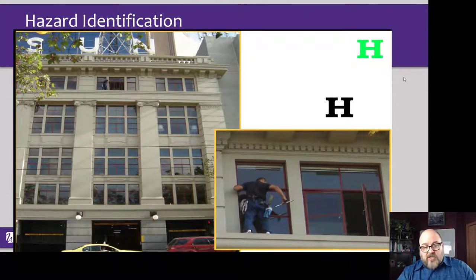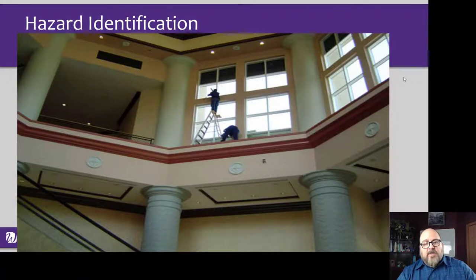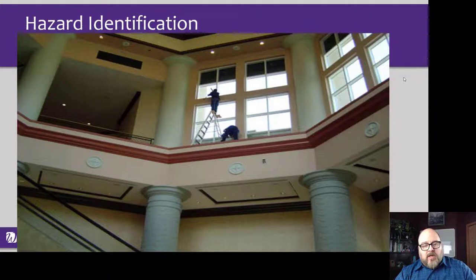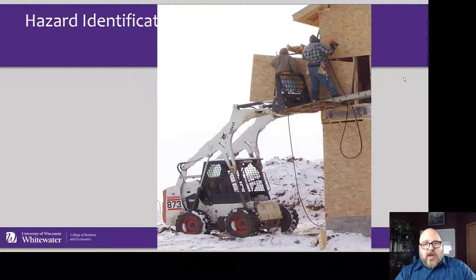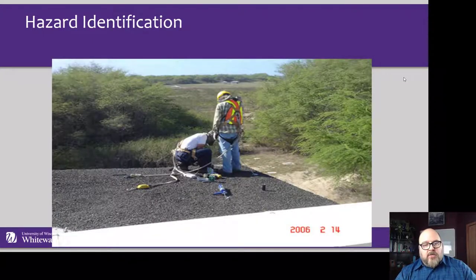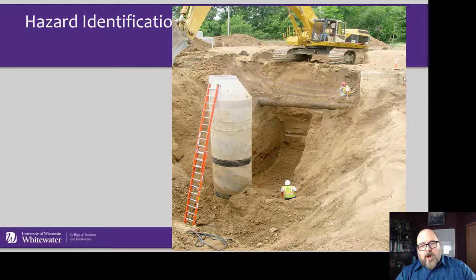Same thing here — a person on an A-frame ladder standing at the very top, which increases the likelihood of it tipping. He's not just going to fall the height of the ladder; it'll be all the way to the floor of the rotunda. Here you've got some gentlemen being a MacGyver, working from the forks of a bobcat — that's not what it's designed for. And these gentlemen have personal fall arrest systems on, but they're not tied off to anything. So if they go over the edge, it's the ground that's going to catch them.